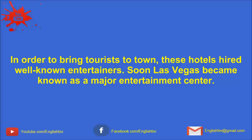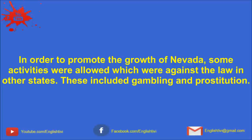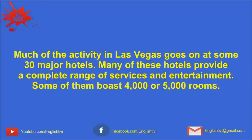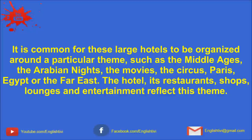In order to promote the growth of Nevada, some activities were allowed which were against the law in other states. These included gambling and prostitution. It was also easier to get married in Nevada than in some other states. Over time, many other attractions were developed. Much of the activity in Las Vegas goes on at some 30 major hotels. Many of these hotels provide a complete range of services and entertainment. Some of them boast 4,000 or 5,000 rooms. It is common for these large hotels to be organized around a particular theme, such as the Middle Ages, the Arabian Nights, the movies, the circus, Paris, Egypt, or the Far East.